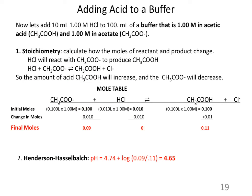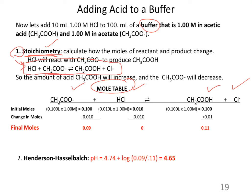Since we've disturbed the buffer with HCl, this is a two-step calculation. Step one: stoichiometry in moles. Anytime you have a chemical reaction, convert from molarity to moles — it is moles that react. Set up a mole table (like an ICE table but in moles) for the balanced reaction: HCl + acetate → acetic acid + Cl⁻. The final moles from this table get plugged into Henderson-Hasselbalch.